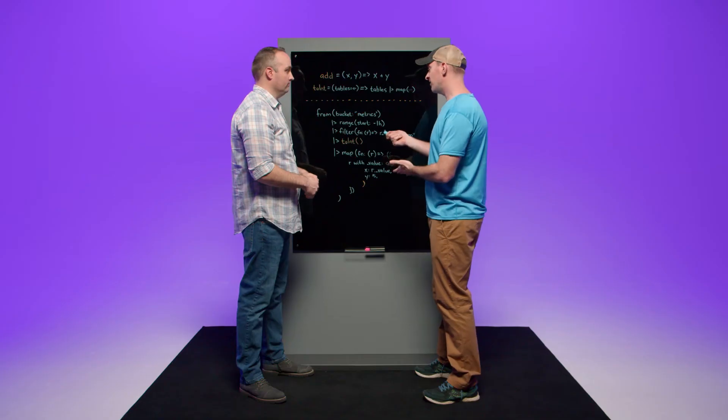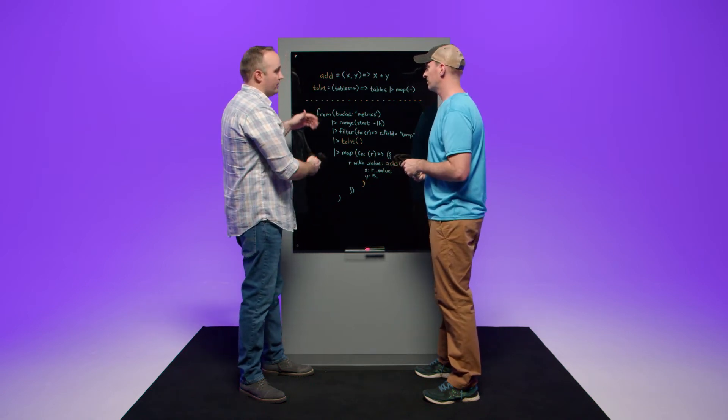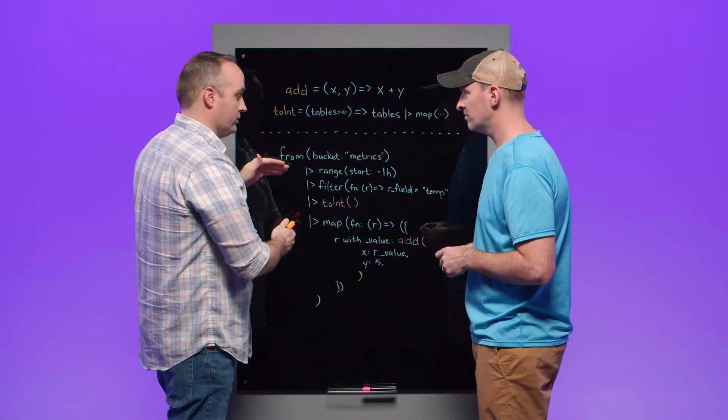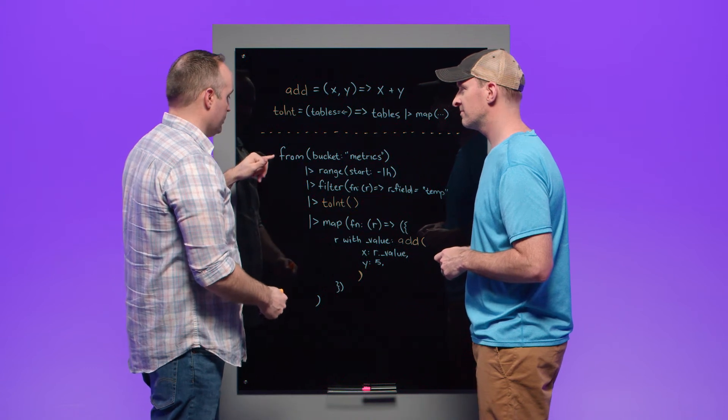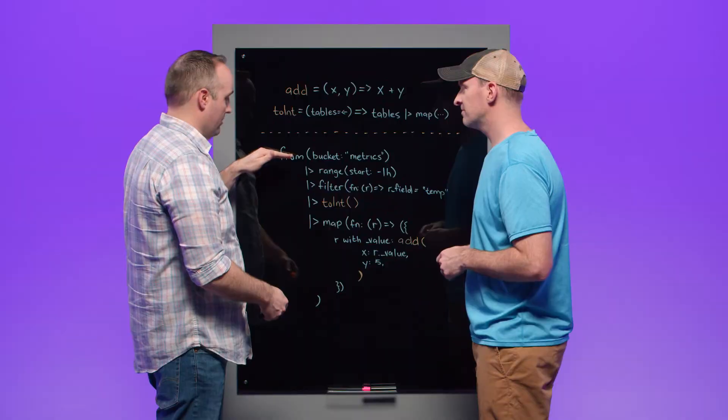So there are clearly a lot of functions out there already. So you have some written on the board here. Can you walk us through, show us how they work? Sure. So this is a really common use case of querying data from InfluxDB. Here we have a chain of functions designed to perform a specific task. We have the from function that queries data from an InfluxDB bucket. The output of from is then pipe forwarded into the range function, which filters that data by time. The filter function then filters that data by column value.